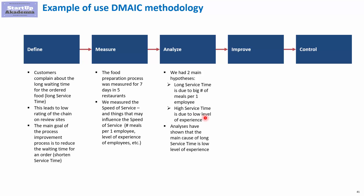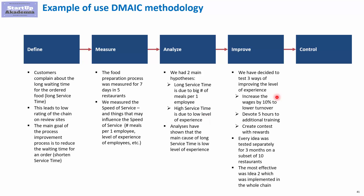Once we know the reason for our problem, we address it in the Improve stage. We listed three potential solutions: increase wages by 10% to decrease turnover and keep experienced people; devote five hours per week to additional training; and create contests with rewards. Assuming we tested every idea for three months across 10 different restaurants, we discovered that idea two — additional training — was the best one, and would need to be implemented across the whole chain.